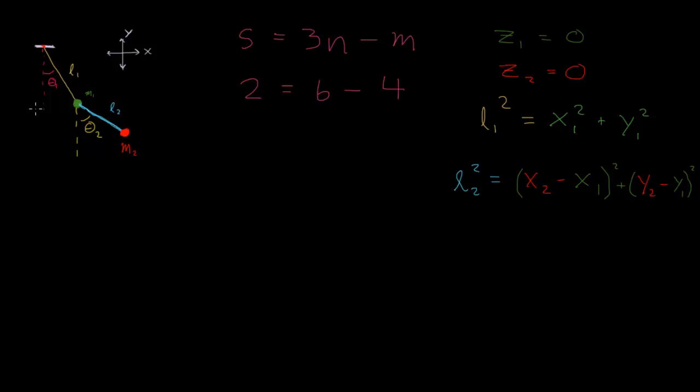Let's write these things in terms of theta one and theta two. Let's start here and write x one and y one in terms of theta one. They should only depend on theta one because this is just swinging back and forth, fixed at the origin, and it shouldn't matter what this thing is doing. So x one equals L1 sine theta one.